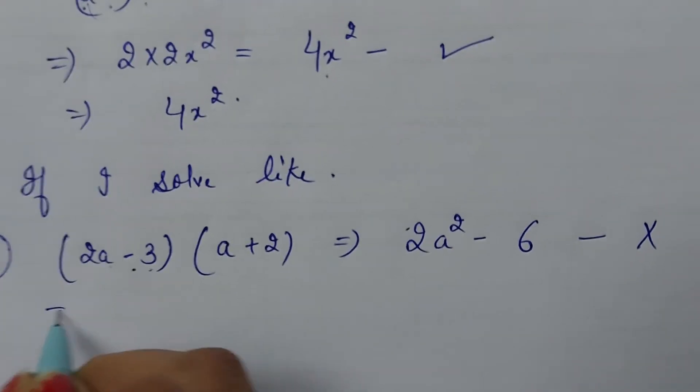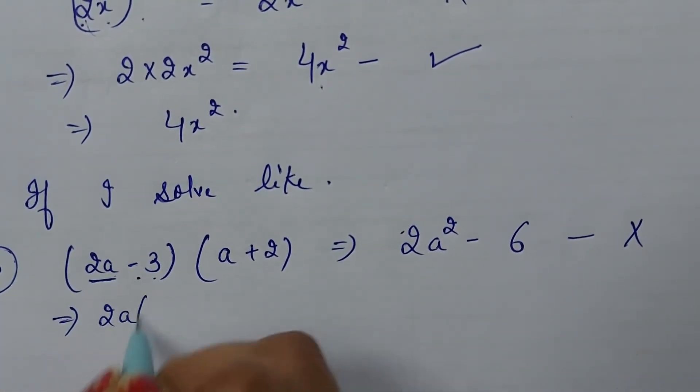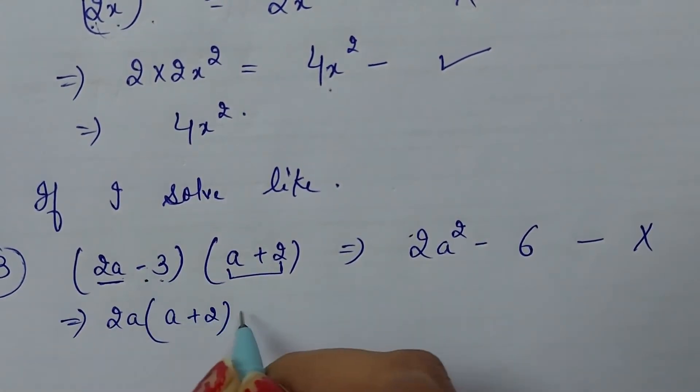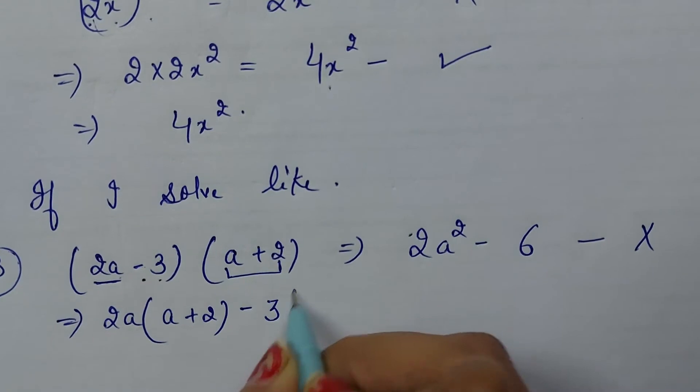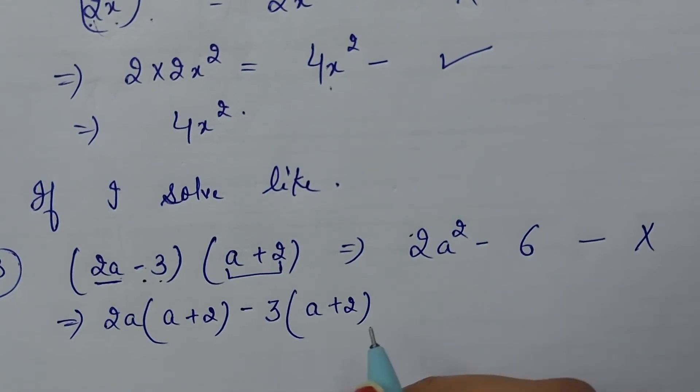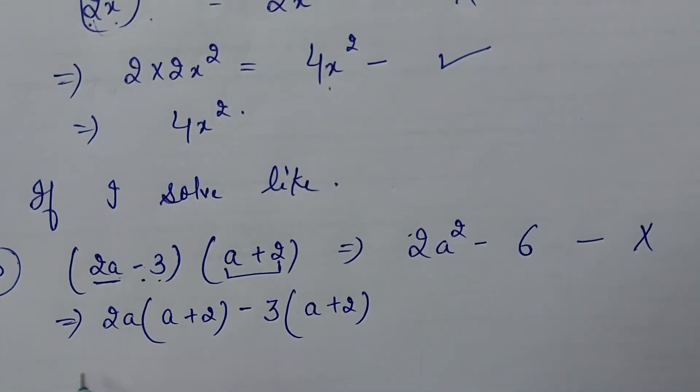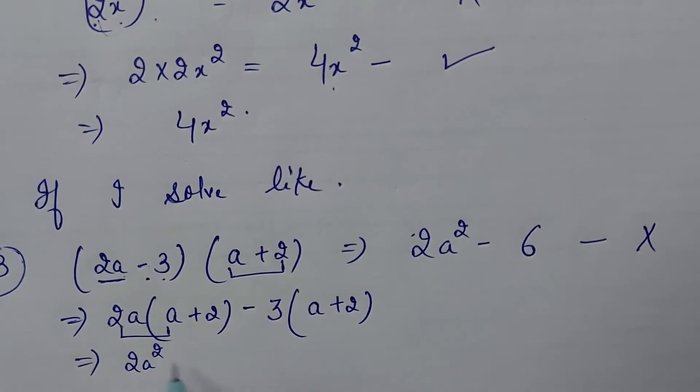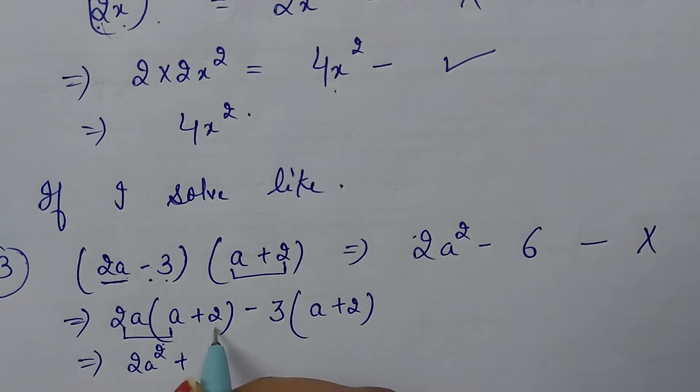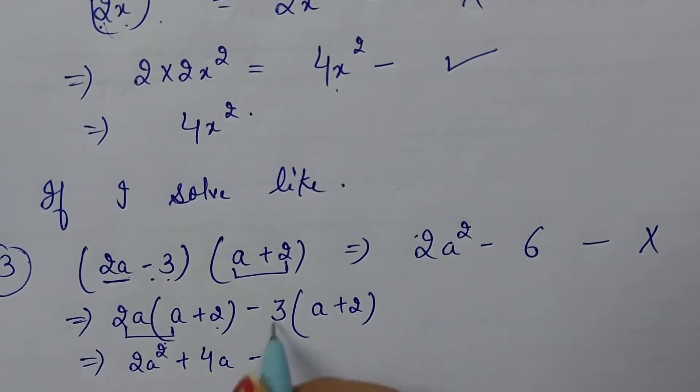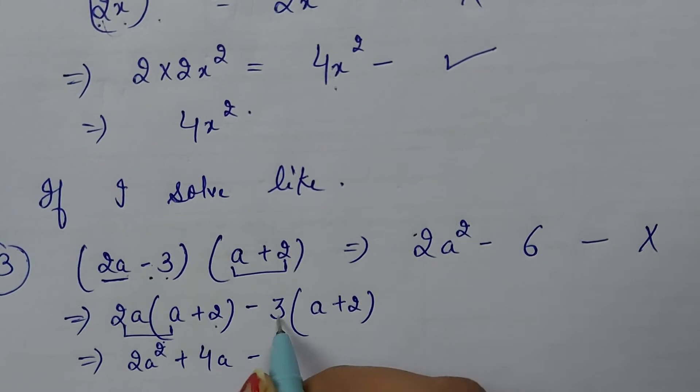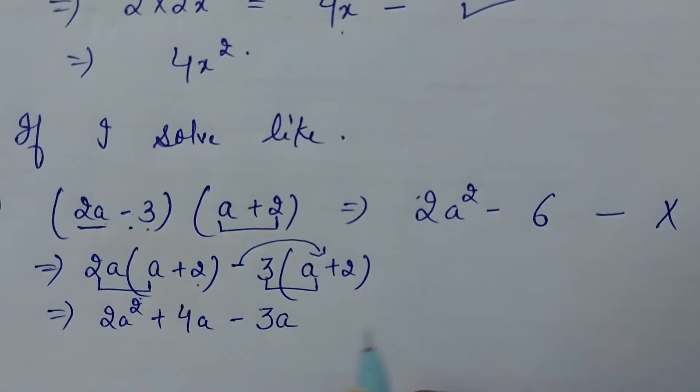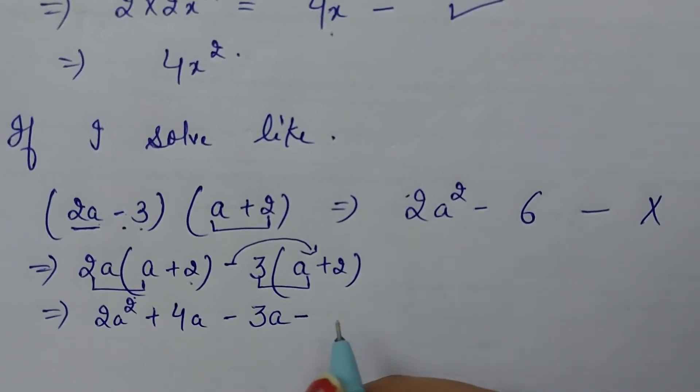It's the correct answer is: sabse pehle hai 2a ko a plus 2 ke saath multiply karein. Phir ye minus 3 hai yahan pe likhein. So then phir dubara a plus 2 ke saath multiply karein. So, iska answer aaya: 2a ko a ke saath multiply kiya 2a square. 2a ko 2 ke saath multiply kiya 4a. Minus 3 ka 3 hai aise likhein. Aur 3 ko a ke saath multiply kiya 3a. Aur minus agar hai, to addition ka sign change ho ke minus ho jayega.